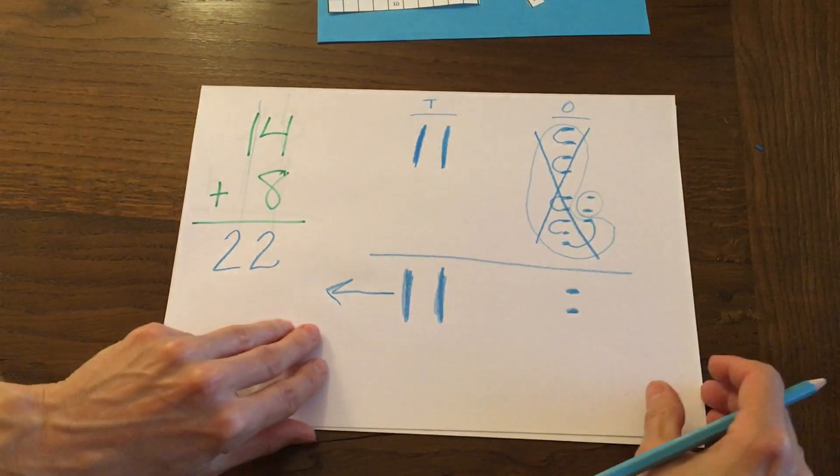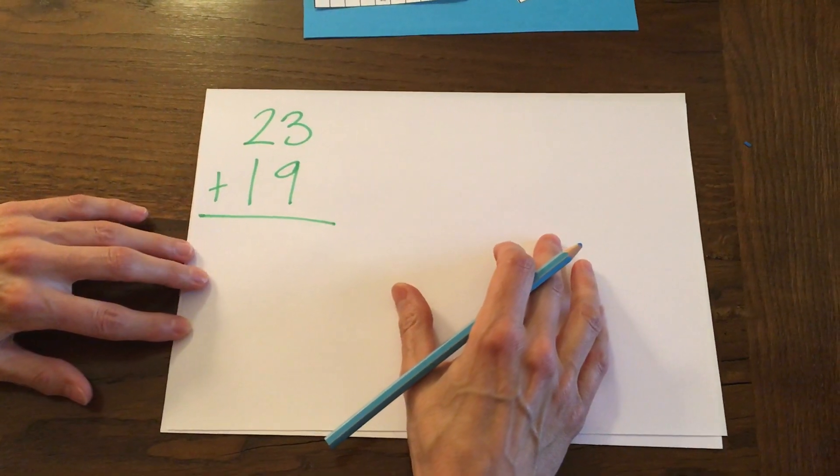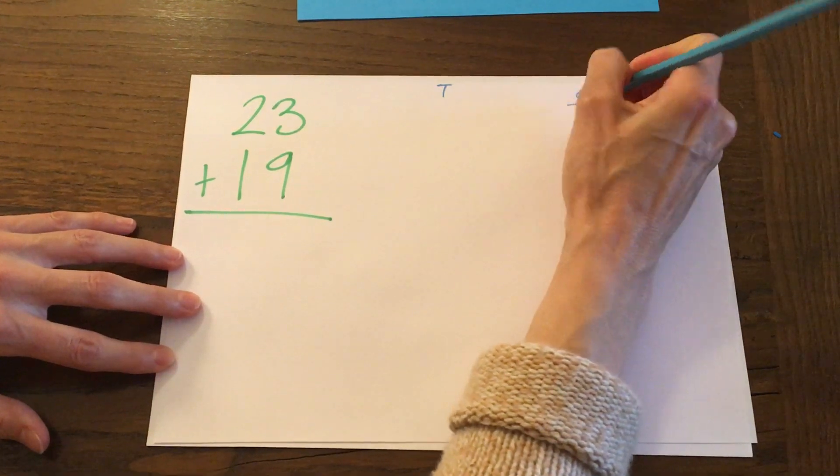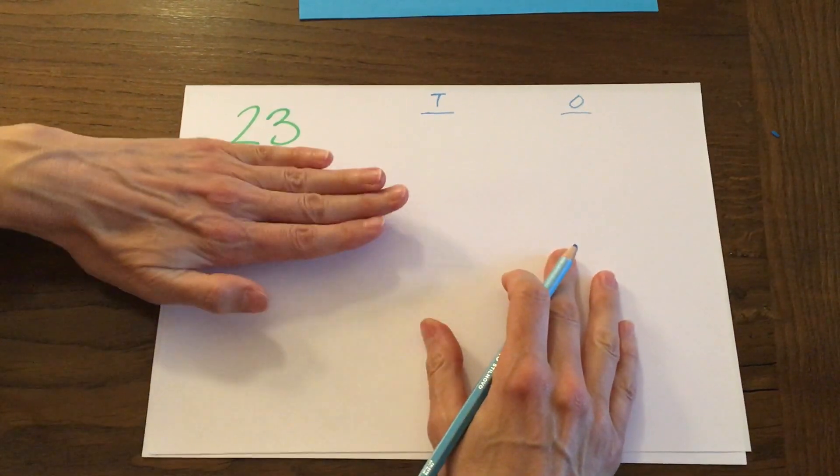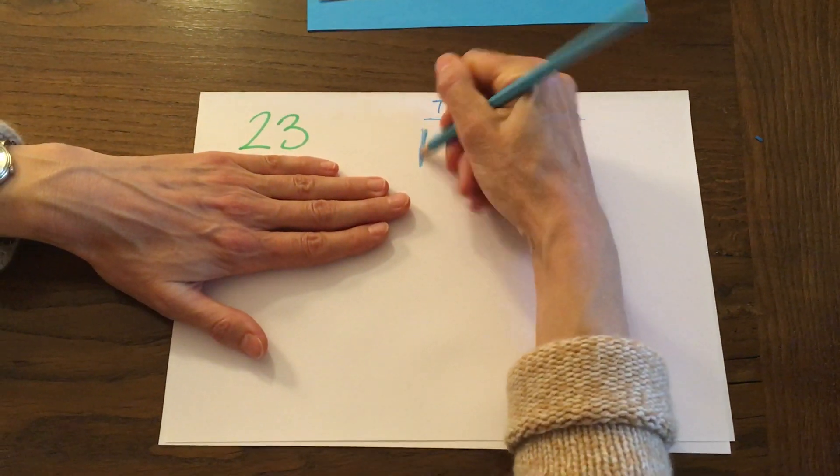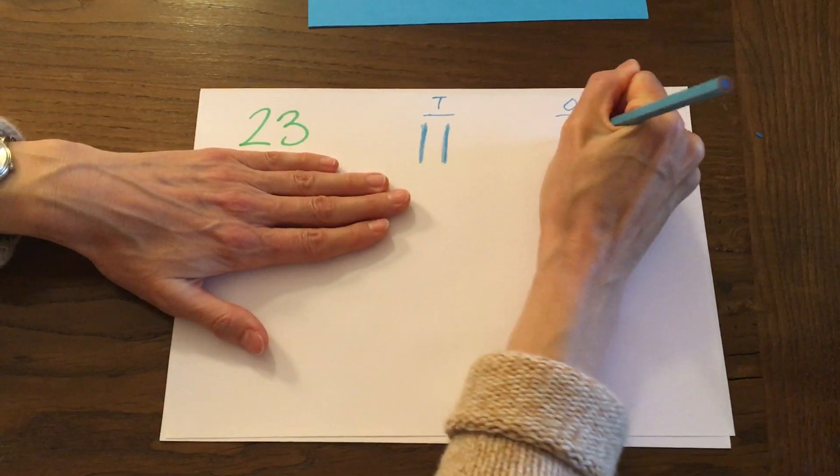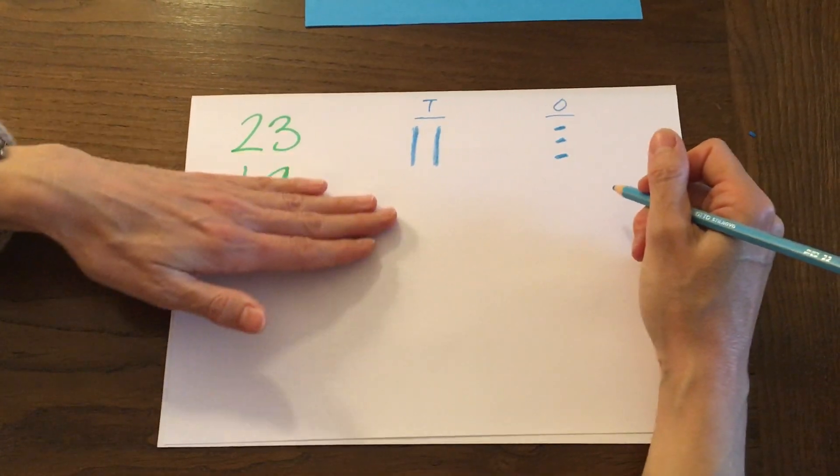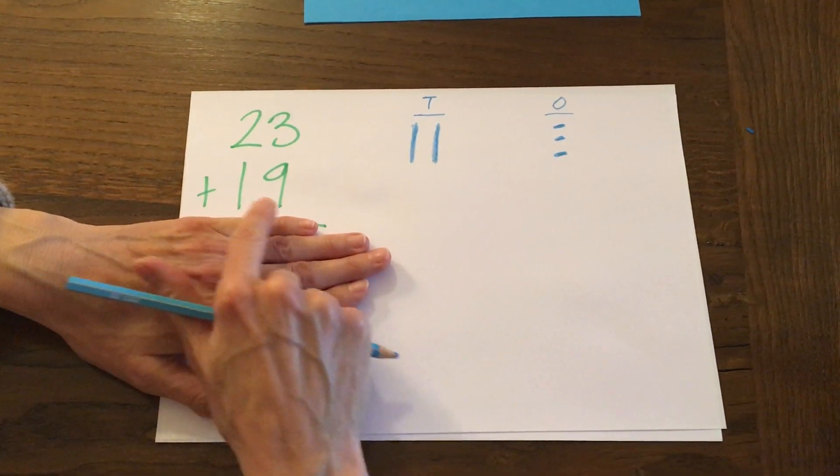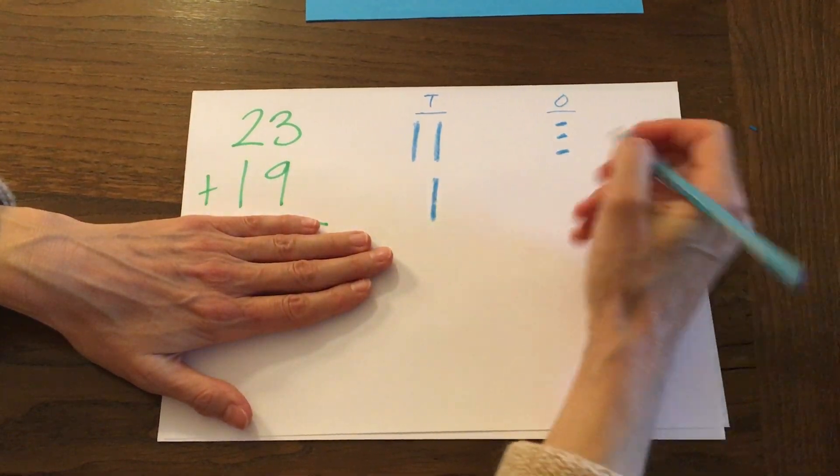Ooh, let's try another one. I think you're getting this. 23 plus 19. Okay, let's do our pictures over here. Tens and ones. Start with your top number. Two tens, three ones. 10, 20, 21, 22, 23. And underneath it, let's draw this number. 19. One 10 and nine ones.